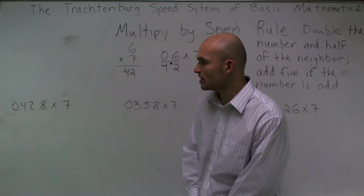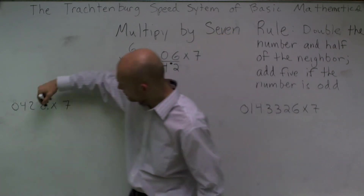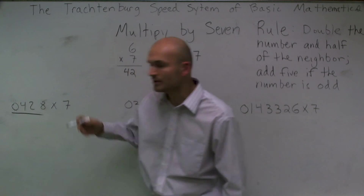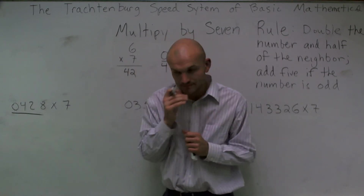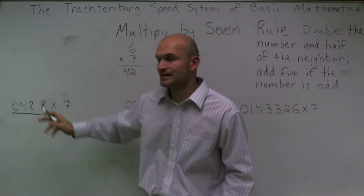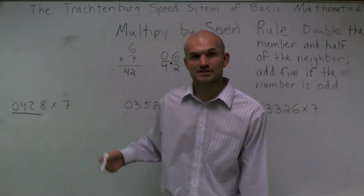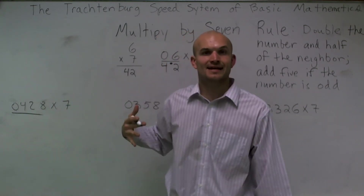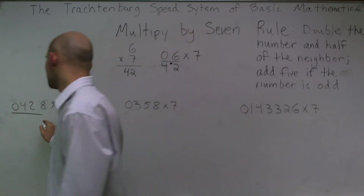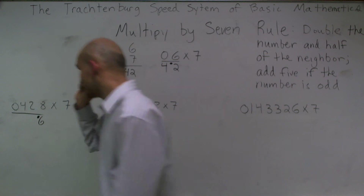Let's go through a couple of practice problems. The first one: I'm going to multiply 428 times 7. I'm going to underline the number and make sure I put a 0 in front. The first thing I do is take my first number and double it. So 8 doubled gives me 16. I can't add anything to its neighbor, so I say 16 with the carried 1.